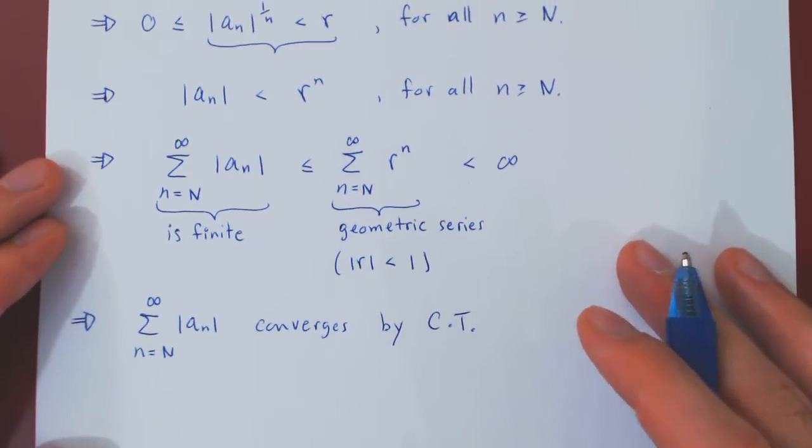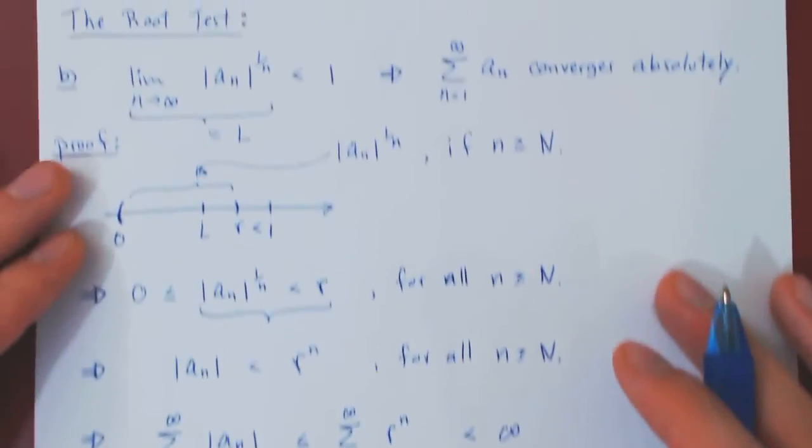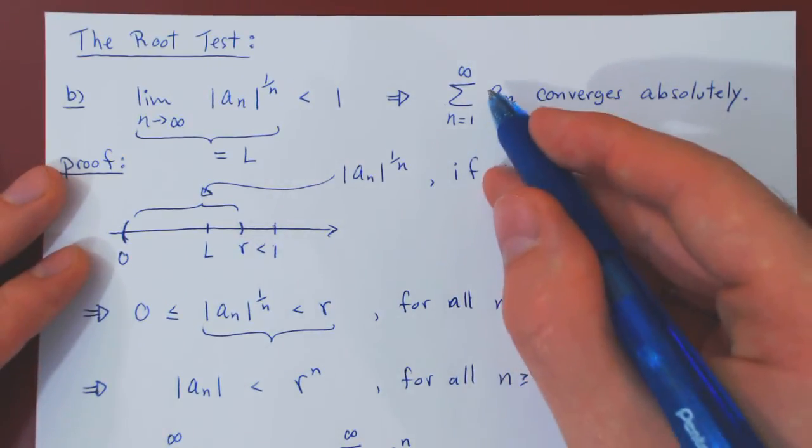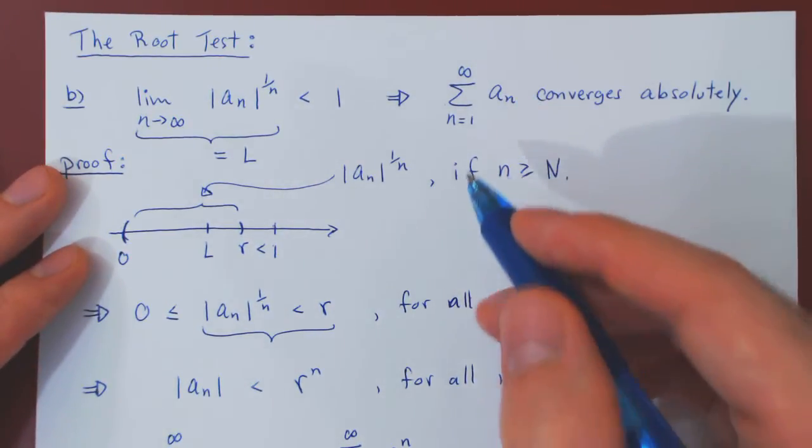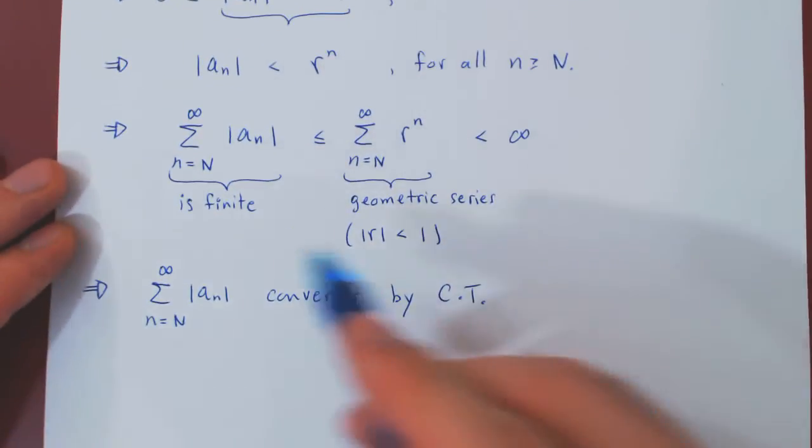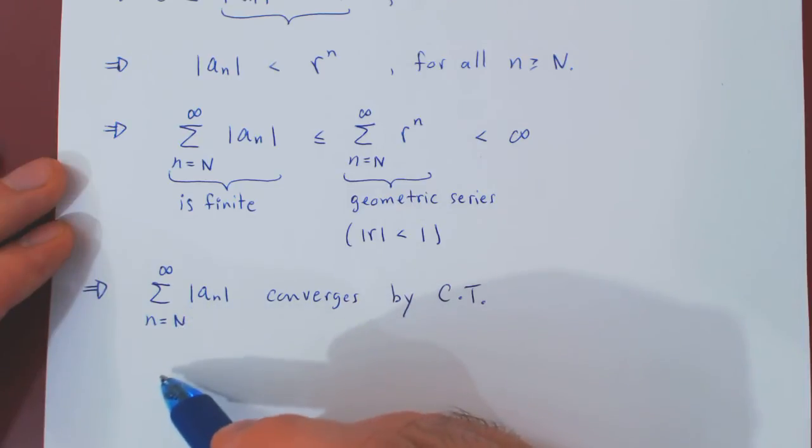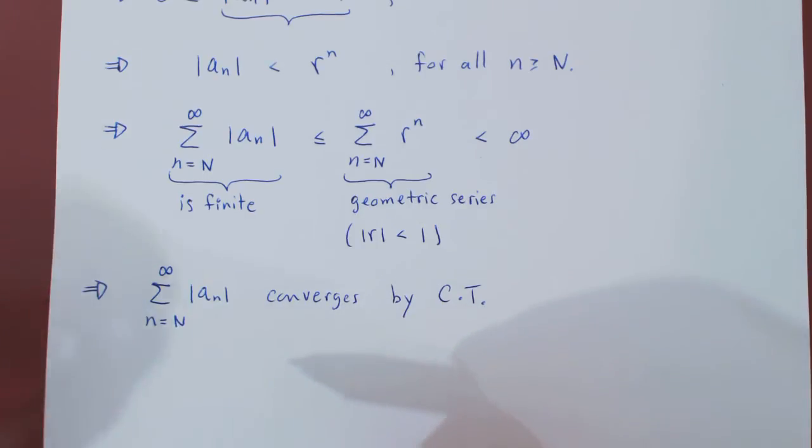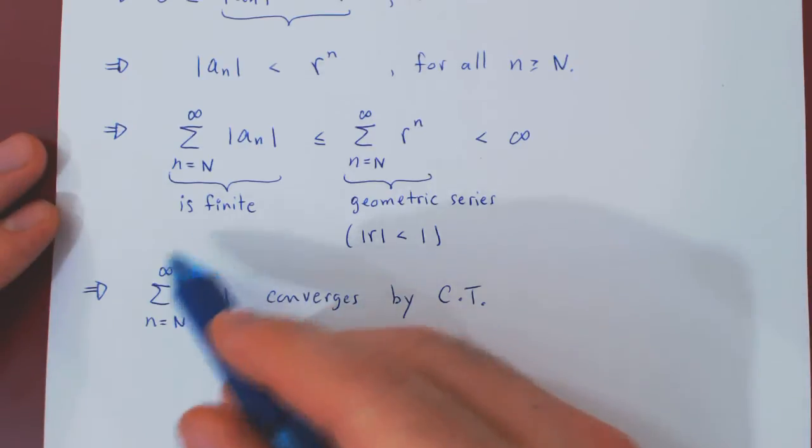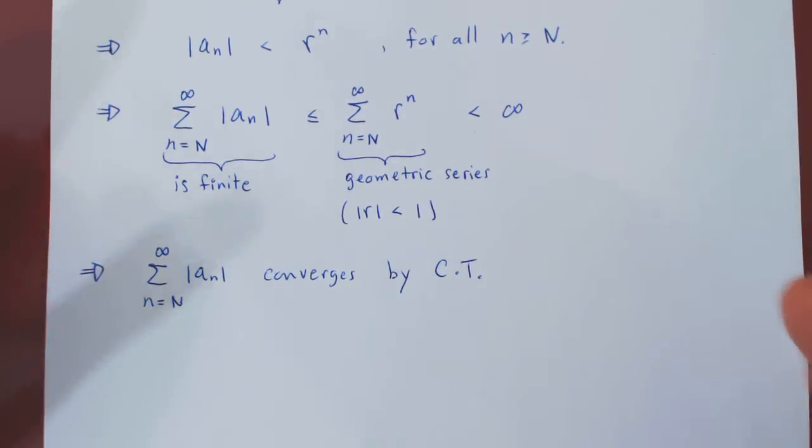But now think about this. We were interested in a series beginning at 1. But the only difference between beginning at 1 and beginning at N is that we are now omitting the terms |a_1|, |a_2|, up to |a_{N-1}|. But we are only omitting a finite set of terms of our series. This will never affect convergence as a finite sum of real numbers is a real number.